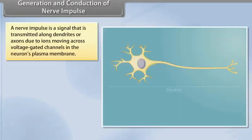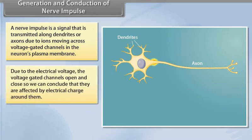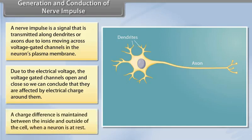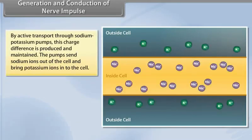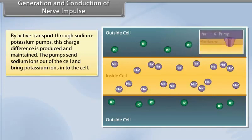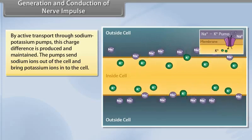Generation and conduction of nerve impulse. A nerve impulse is a signal that is transmitted along dendrites or axons due to ions moving across voltage-gated channels in the neuron's plasma membrane. Due to the electrical voltage, the voltage-gated channels open and close. A charge difference is maintained between the inside and outside of the cell when a neuron is at rest. By active transport through sodium-potassium pumps, this charge difference is produced and maintained.